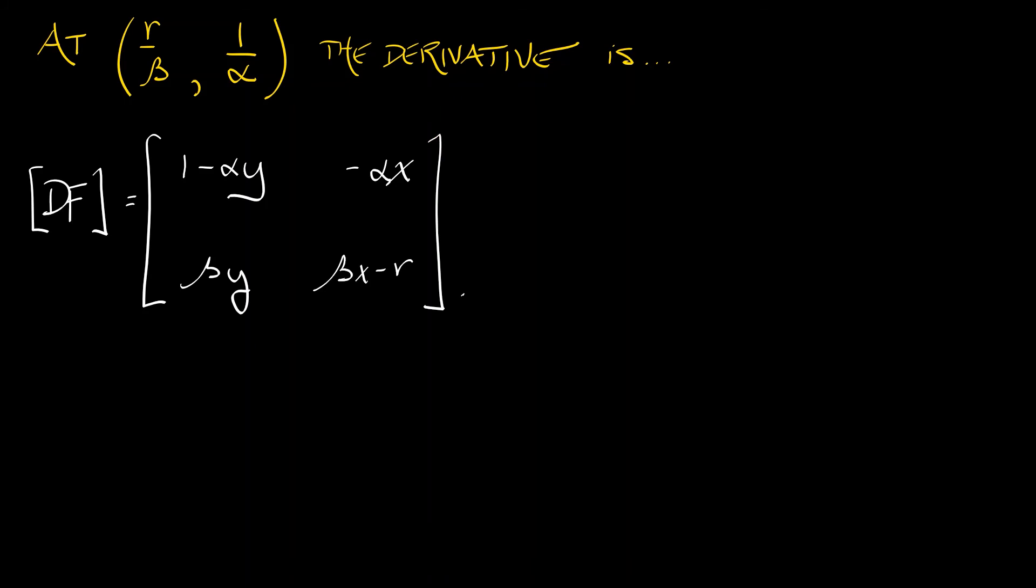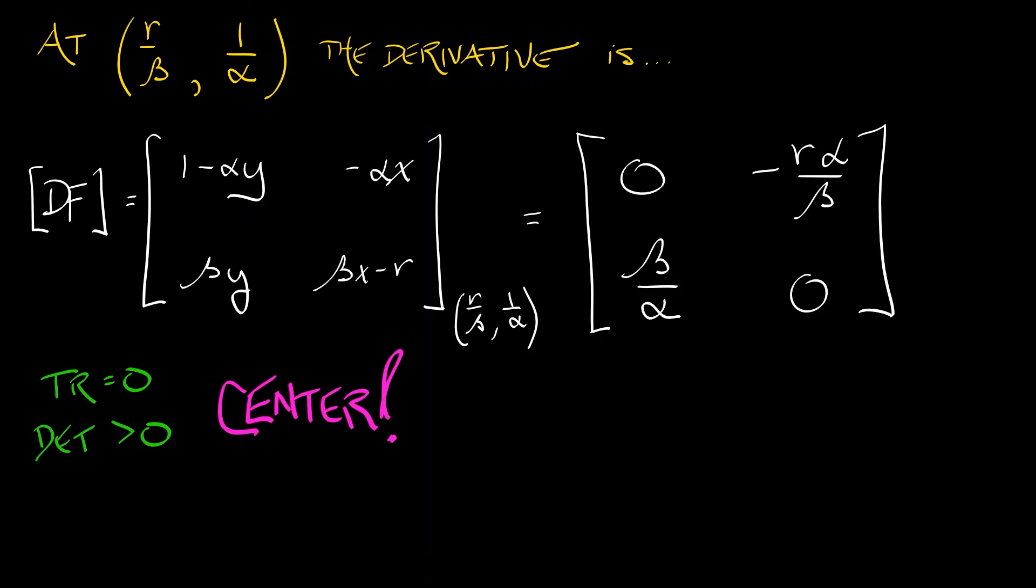Now what about at the interesting equilibrium? At x = r/β, y = 1/α, we evaluate the derivative and get the matrix [0, -rα/β; β/α, 0]. This is a matrix that has trace 0 and positive determinant, which means by our classification we have a center.